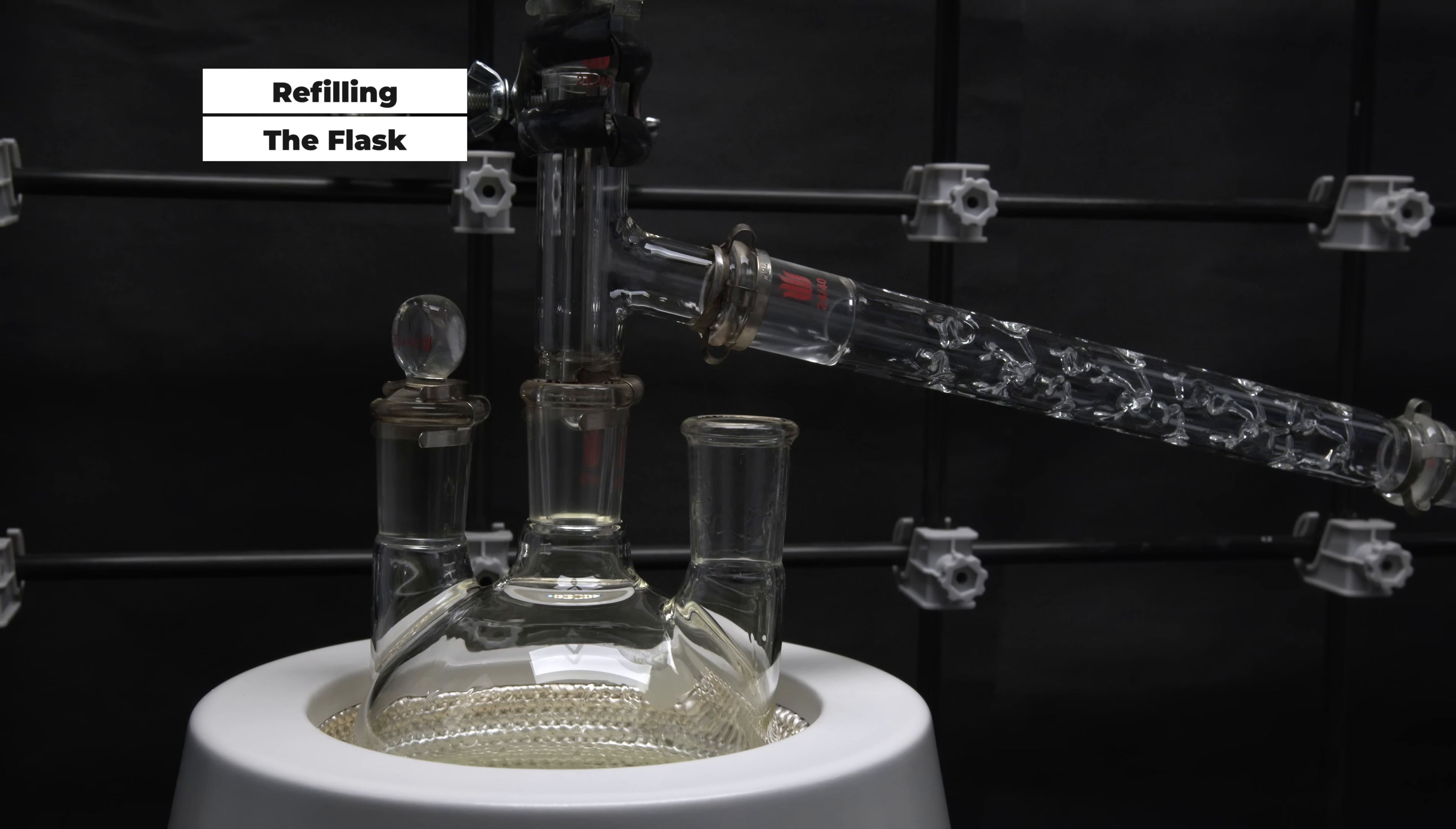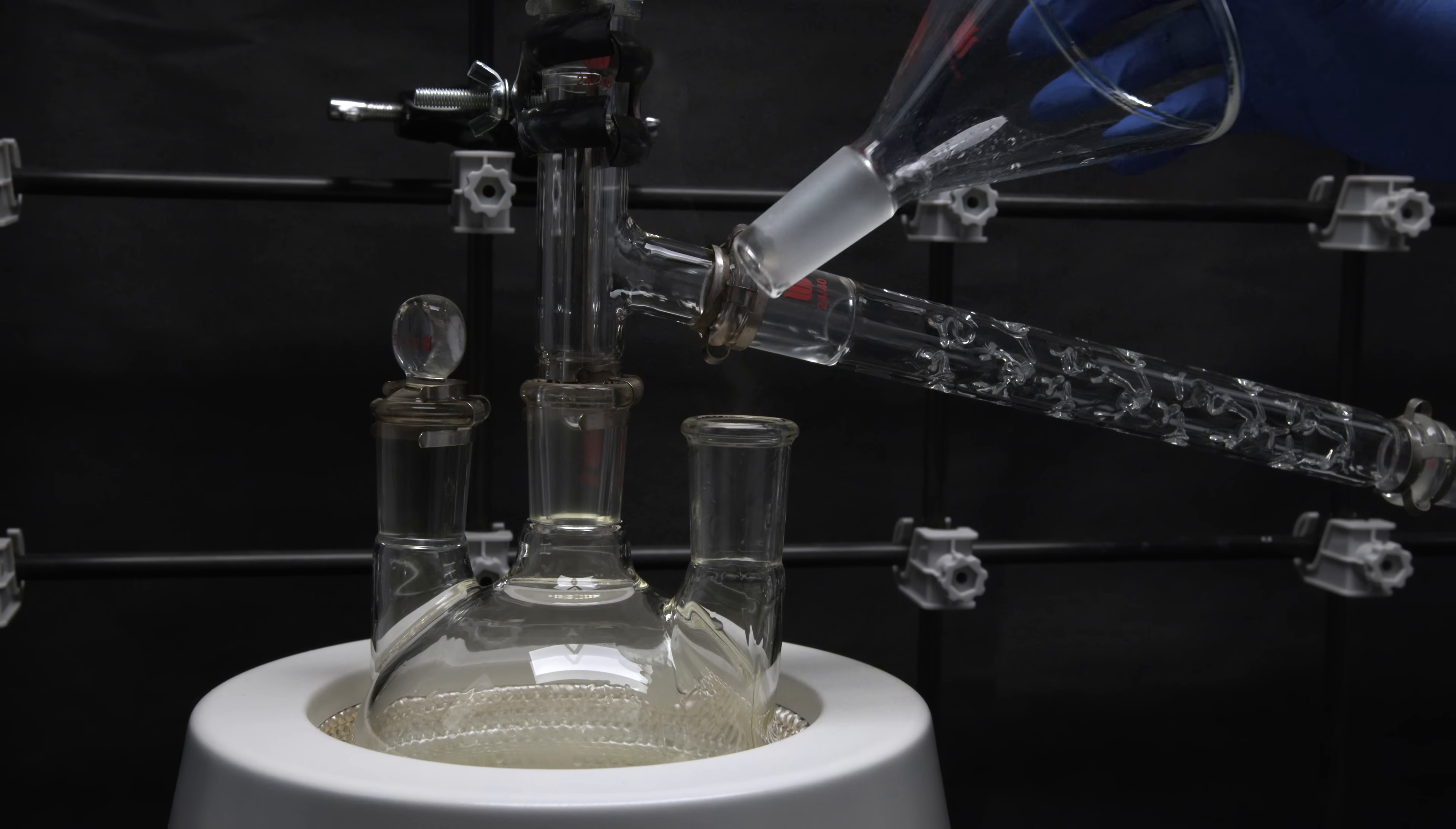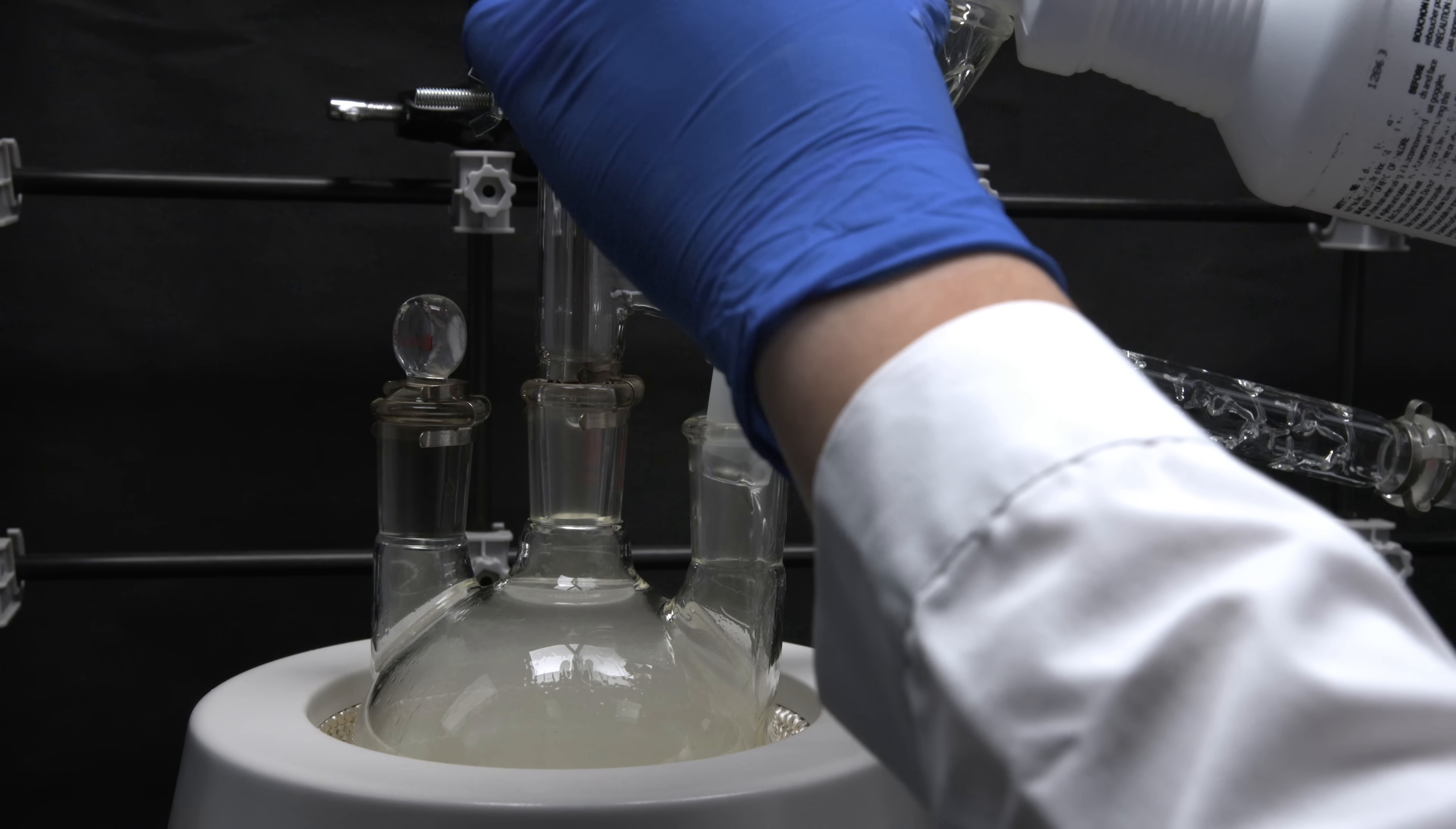Distilling a single batch of 500 ml of drain opener usually takes 5 to 7 hours. And I usually run multiple batches in a single run to save time. To do so, simply let the setup cool down and refill your flask using a funnel, and restart your heating again.